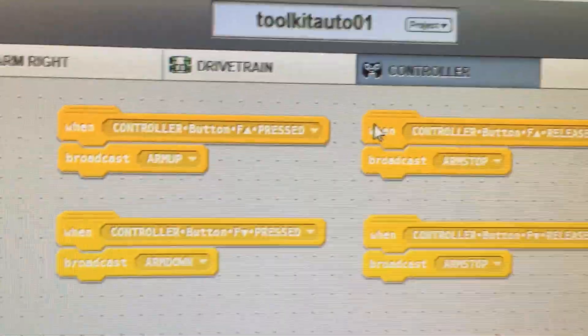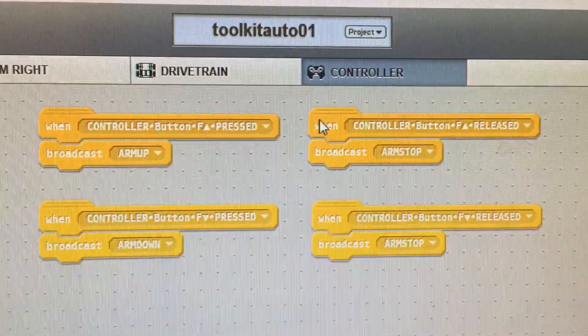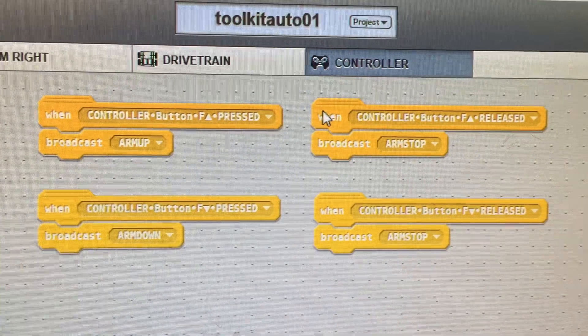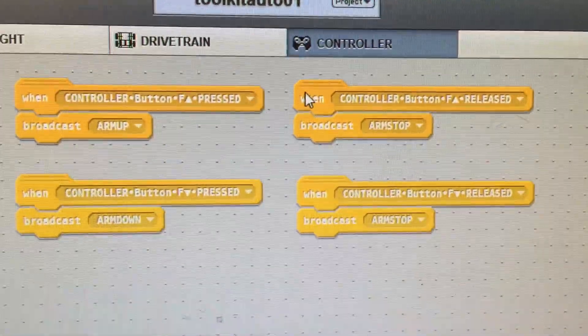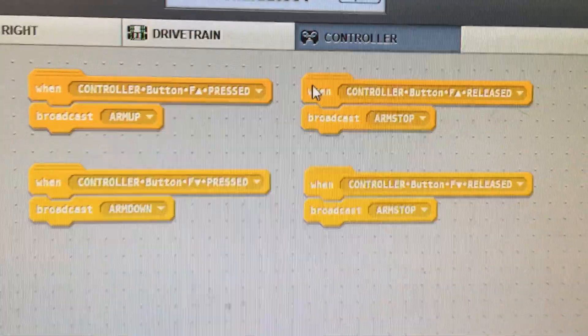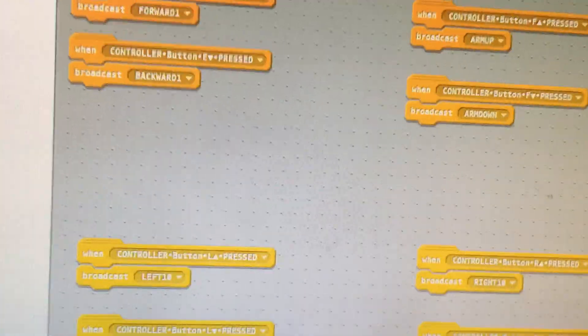And then we have our arm controls. F up pressed, arm up. F down pressed, arm down. F up released, F down released, arm stop.